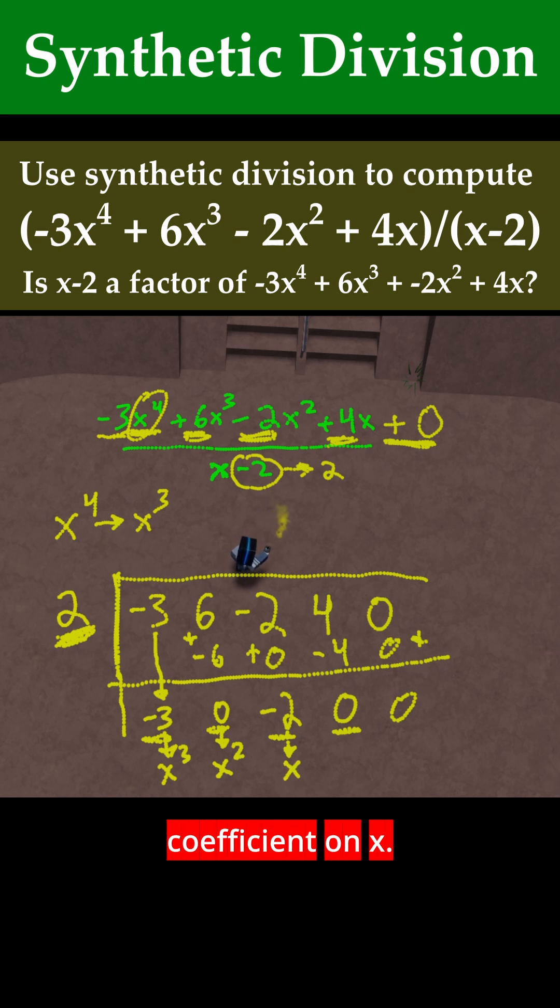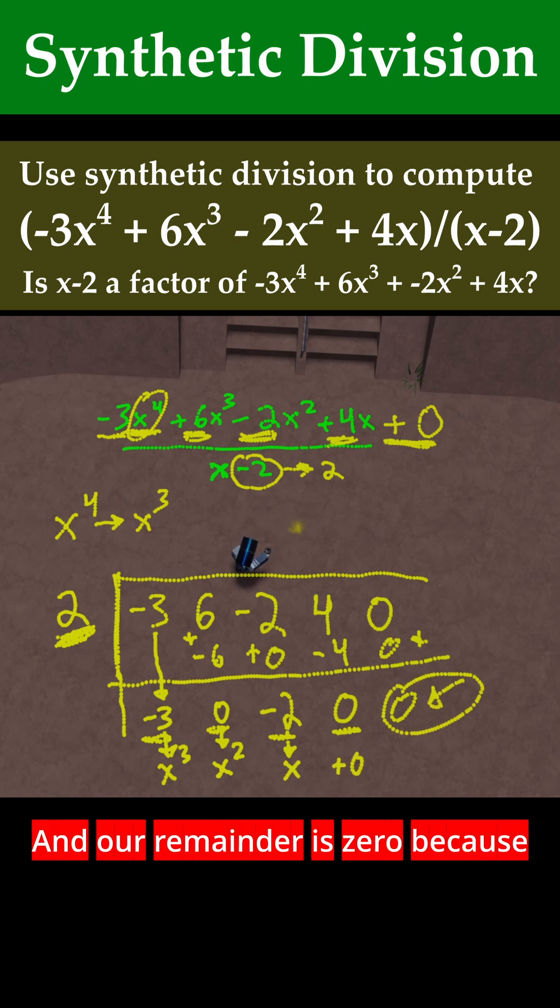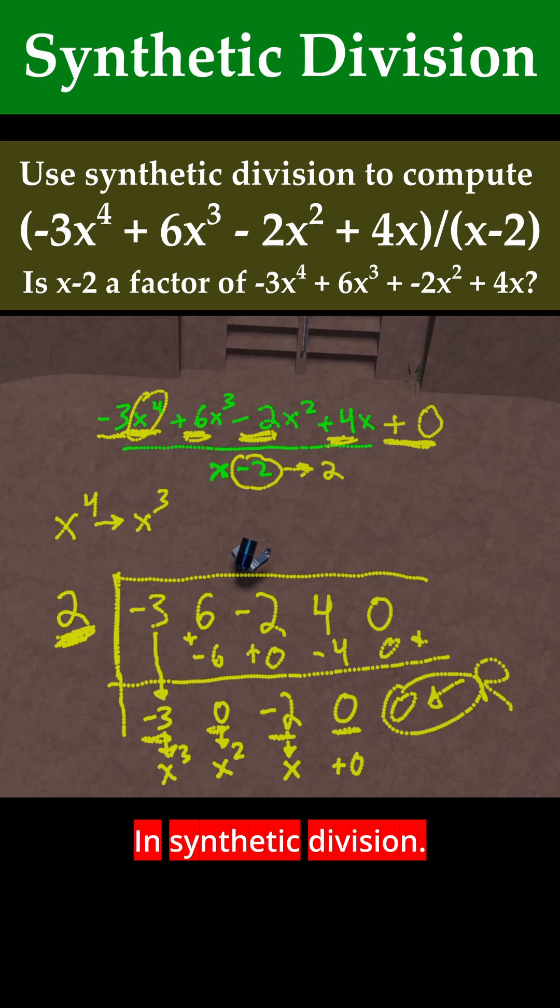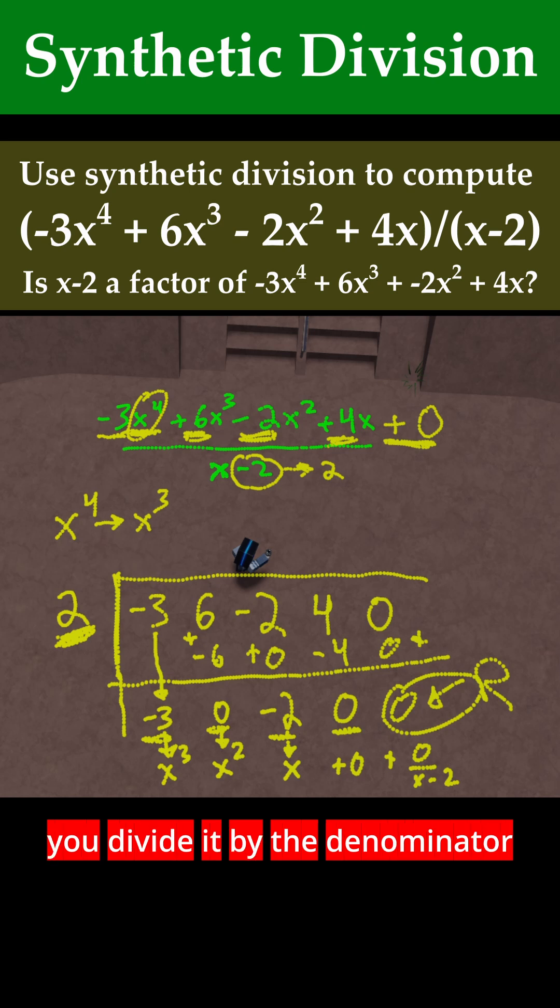Therefore, -2 is the coefficient on x. 0 is just +0. And our remainder is 0 because that's the final number in the synthetic division. This is like saying 0 divided by x - 2, because you take the remainder and divide it by the denominator in the problem.